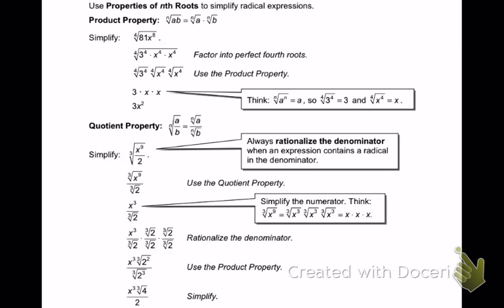As you look here, we're going to use properties of nth roots to simplify radical expressions. For example, I want to simplify the fourth root of 81x to the eighth power. Now we're getting away from the square root — there are some tougher ones here like a fourth root. What does the square root mean?